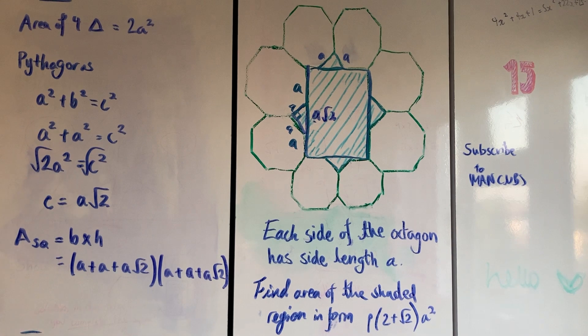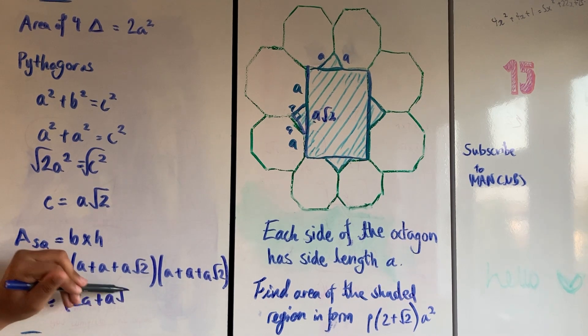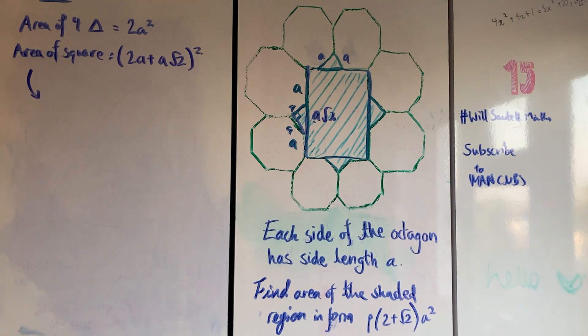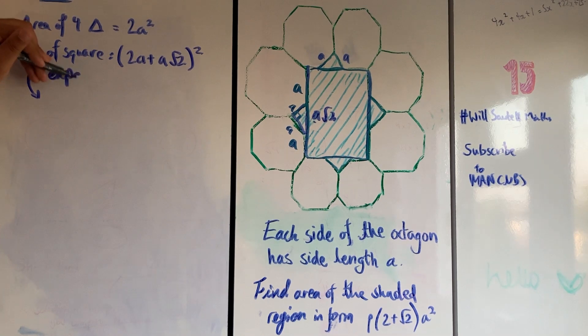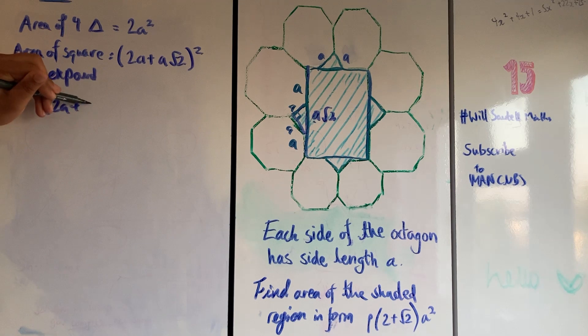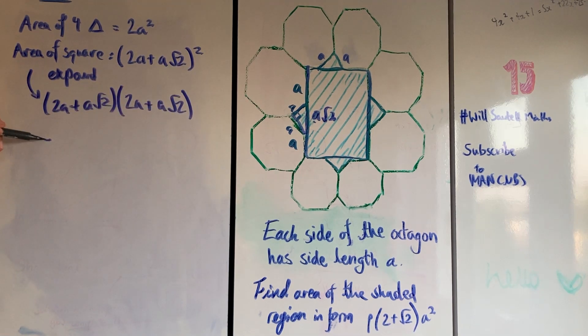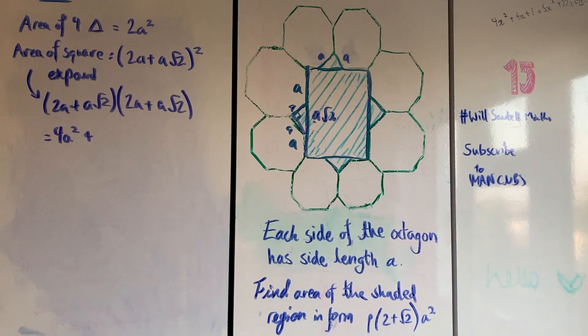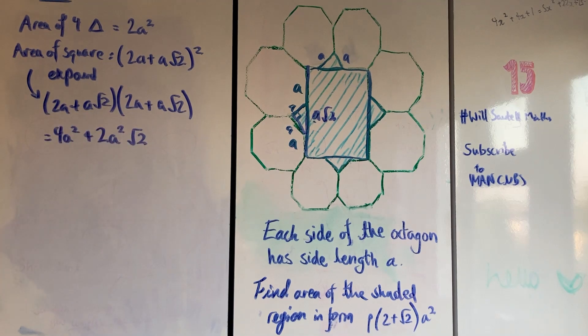Once we've done that, we can tidy it up a little bit. So a + a is just 2a, and we can leave the a√2 on the side. For simplicity I'm writing it as squared because you're multiplying the same thing by itself. Now we're going to start expanding these brackets. Whenever I expand brackets that are squared, I always like to write them out in full because it helps me visualize what I'm expanding and make sure I don't make any silly mistakes. 2a times 2a is 4a². 2a times a√2 is 2a²√2. Then we've got 2a times a√2 again.